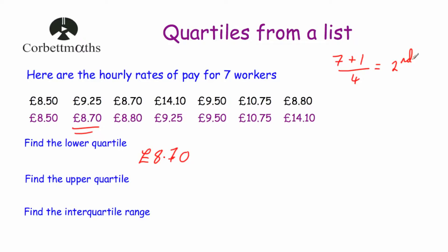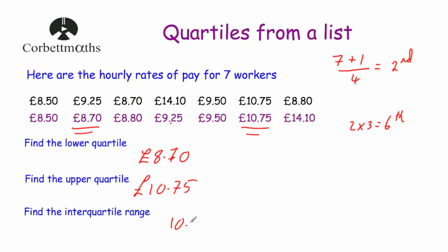For our upper quartile, we know the lower quartile is the second value, so times that by 3, meaning our upper quartile is our sixth value — counting to the sixth position gives us £10.75. So our upper quartile is £10.75. Finally, to find the interquartile range — the difference between them — we take £10.75 and subtract £8.70, which gives us £2.05. So our interquartile range, showing how spread out the middle 50% of the data is, is £2.05.